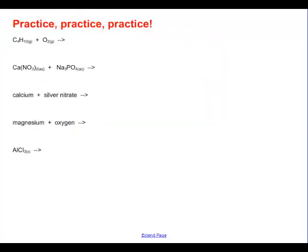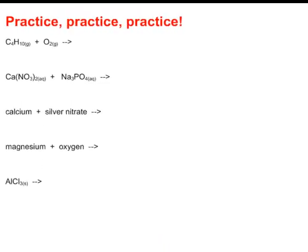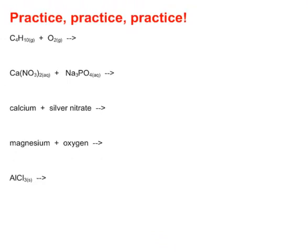So if we have a look at a few, can we predict what's going to happen? If we look at the first one here, C4H10 combines with oxygen. Hopefully, you'll look at that and say, that's hydrocarbon combustion. And so what are the products we're going to get? We're going to get CO2 and H2O.